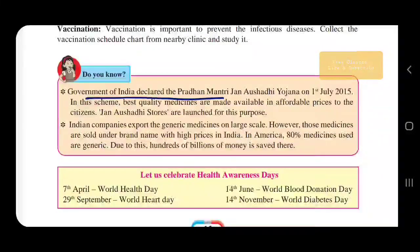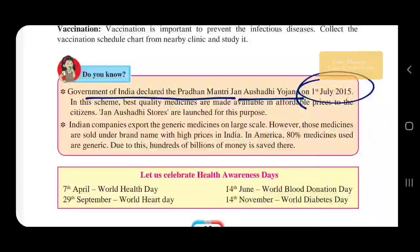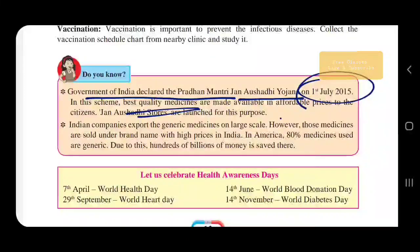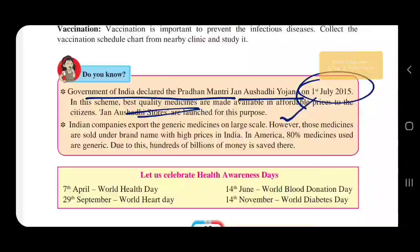The Government of India declared the Pradhan Mantri Jana Aushadhi Yojana on 1st 2015. In this scheme, best quality medicines are made available at an affordable price. In your city, you can find this general store, and you must purchase from this store only.